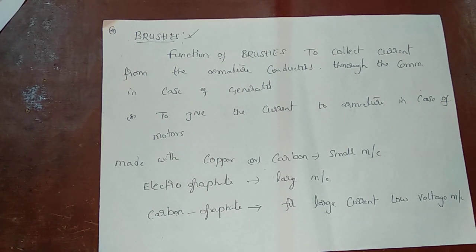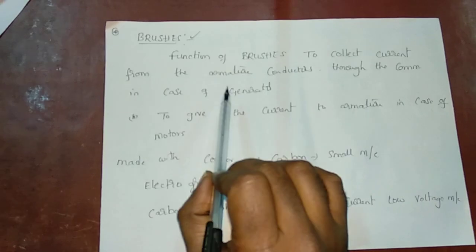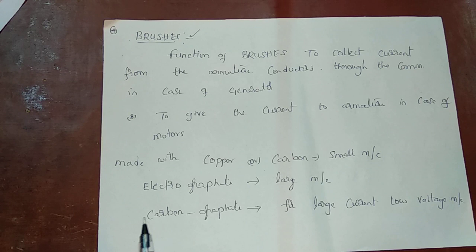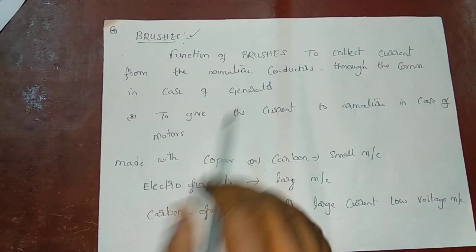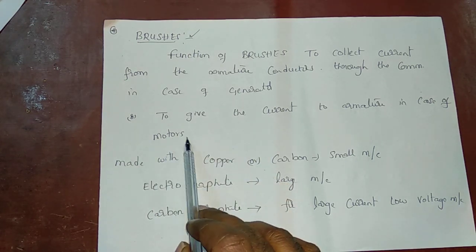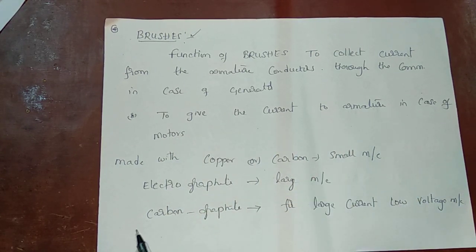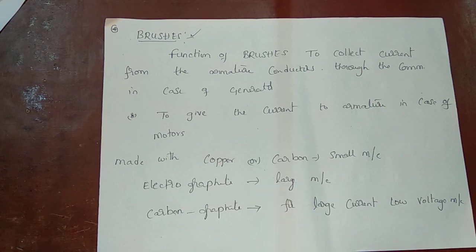The function of brushes is to collect current from the armature conductors through the commutator. In a generator, the current is collected and supplied to the external circuit. In a motor, the brushes supply current to the armature through the commutator.